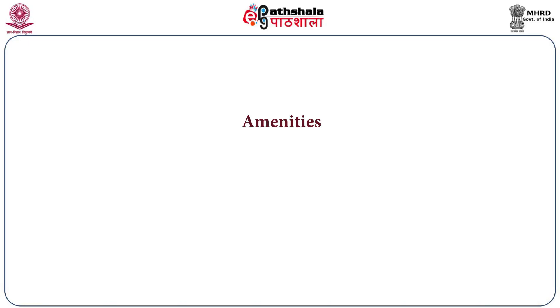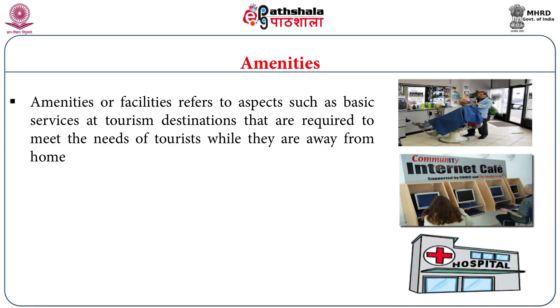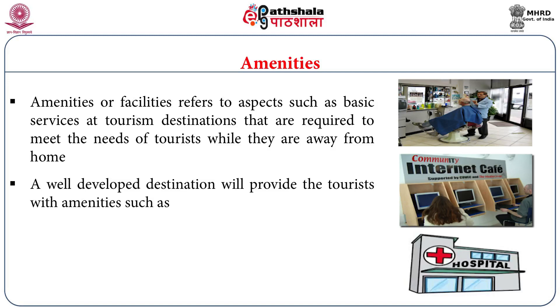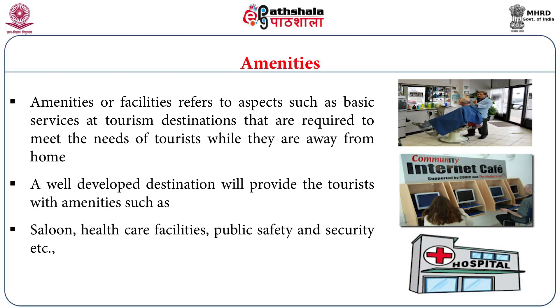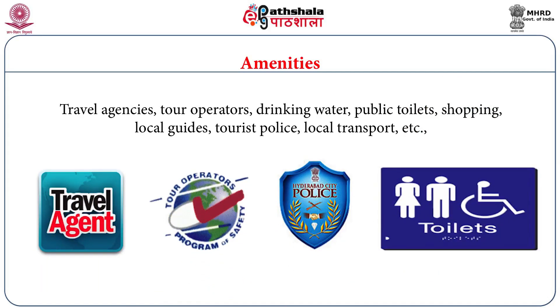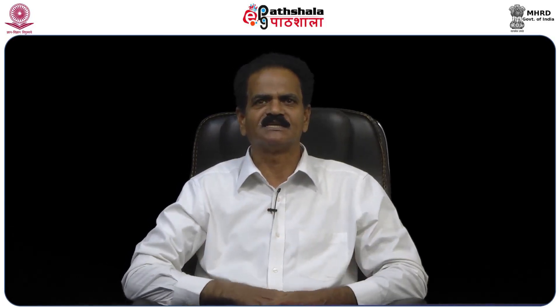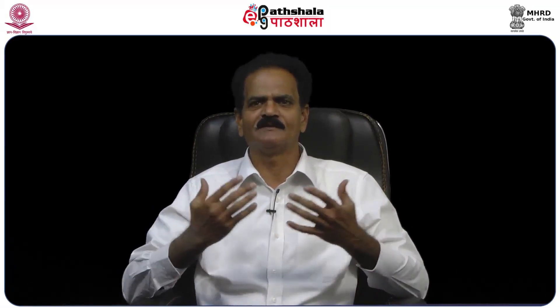The last item in the module is amenities — facilities that a tourist needs at a particular destination or during travel or transit. Amenities refer to basic services at tourism destinations required to meet tourists' needs while away from home. A well-developed destination will provide amenities such as salons, healthcare facilities, and public safety and security. Other amenities include travel agencies, tour operators, drinking water, public toilets, shopping, local guides, tourist police, and local transport.